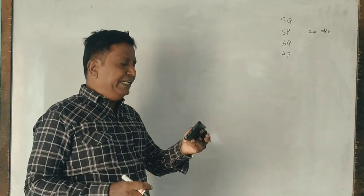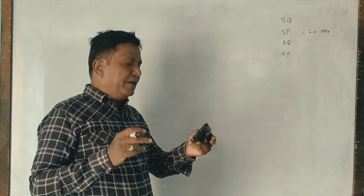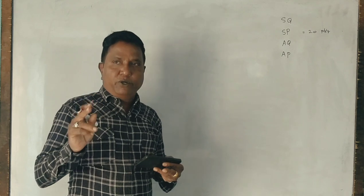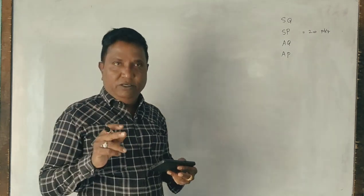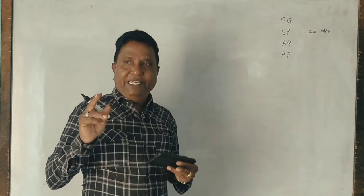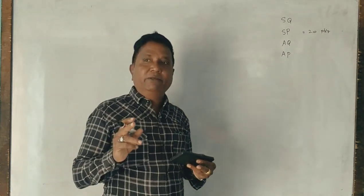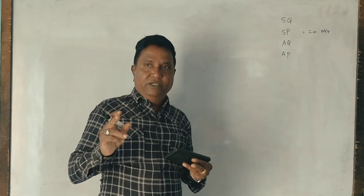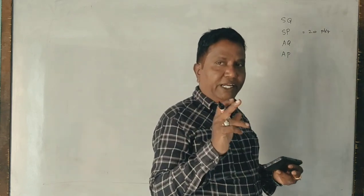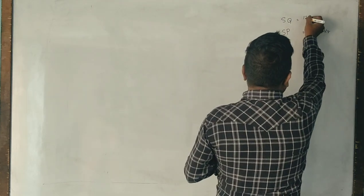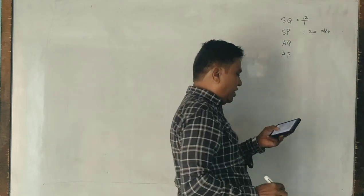Next, standard quantity of material required per unit of output. For one unit to produce, you need 12 kg of raw materials. To produce one unit of output, you need 12 kg. So that means you need 12 kg for one unit of output.